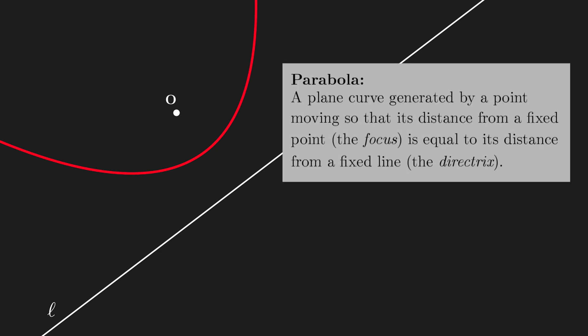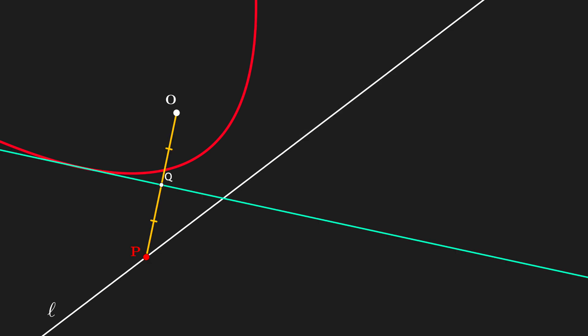A parabola is a plane curve generated by a point moving so that its distance from a fixed point, the focus, is equal to its distance from a fixed line, known as the directrix. To find this point, just draw the line passing through P perpendicular to L.